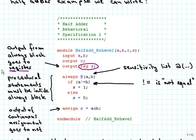Procedural statements must be inside an always block. The always block starts with the keyword always, then the at sign, and then a list of things in parentheses. This list is called the sensitivity list, and it indicates that this particular always block has to be recomputed whenever a change in A or in B occurs.